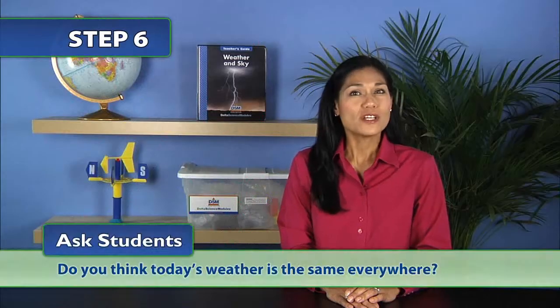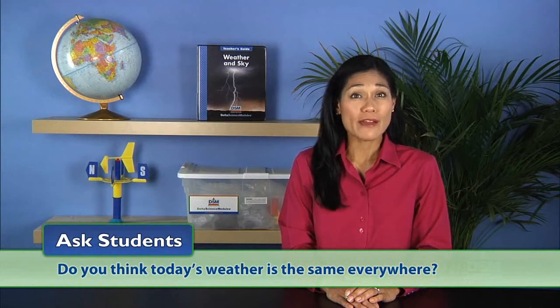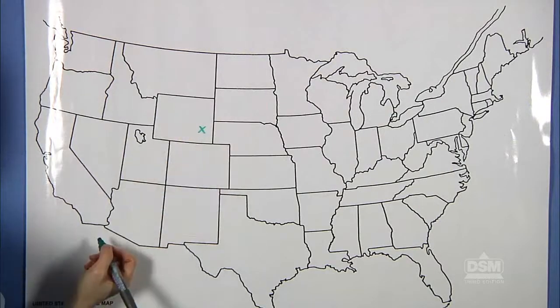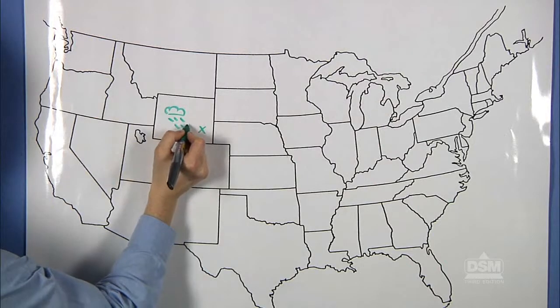Then ask students, do you think today's weather is the same everywhere? Some students may know that weather is different in different places. Display the outline map of the United States and work as a class to locate your state on the map. Use an erasable marker to label it and mark the approximate location of your community. Invite a volunteer to record today's weather on the map near where you live.